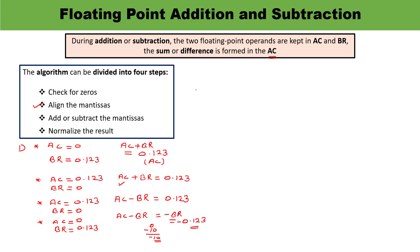The second step is to align the mantissas. You must observe the value of the exponents, because during addition and subtraction the exponents must be made equal. For example, if the first number is 0.583123 into 10 raised to the power 3 and the second is 0.123000 into 10 raised to the power minus 1, the exponents are different, so alignment of mantissas needs to be done first.